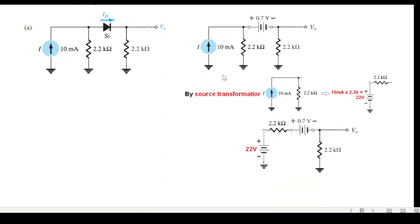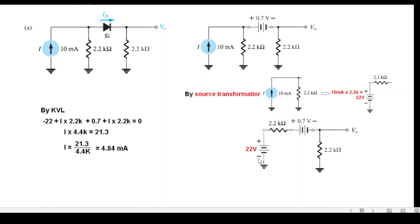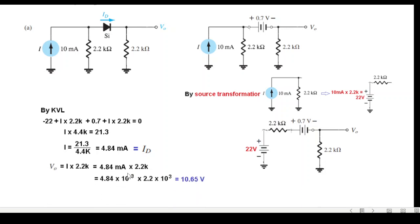With the new equivalent circuit, we need to find both the diode current and the output voltage. Writing the KVL equation and solving, the diode current is 4.84 milliamps. The output voltage is then that current multiplied by 2.2kΩ, which gives V0 equal to 10.65 volts.